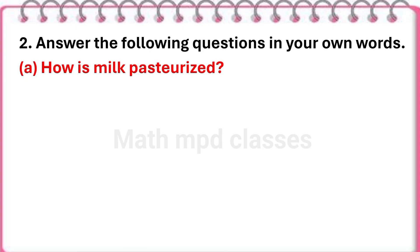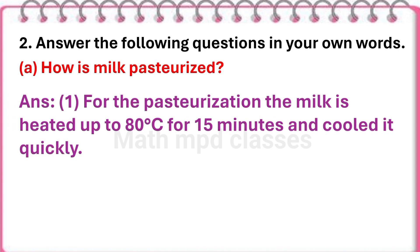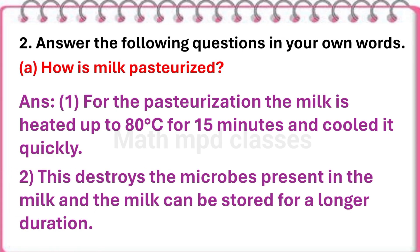Question no. 2. Answer the following questions in your own words. First question: How is milk pasteurized? Answer: For pasteurization, the milk is heated up to 80 degrees Celsius for 15 minutes and cooled quickly. This destroys the microbes present in the milk and the milk can be stored for a longer duration.